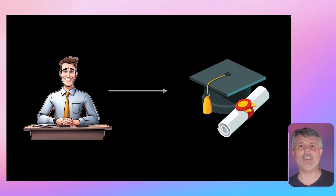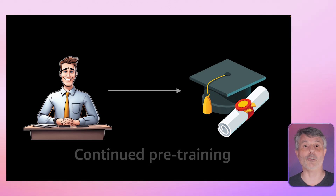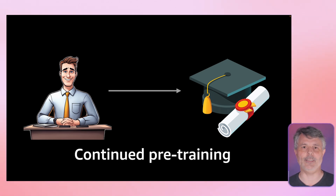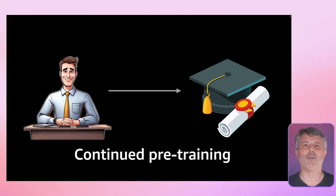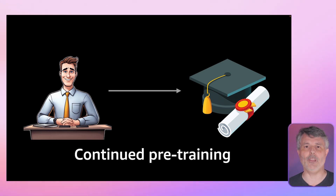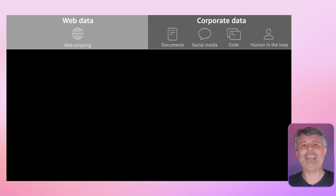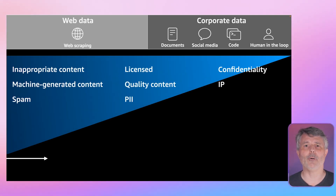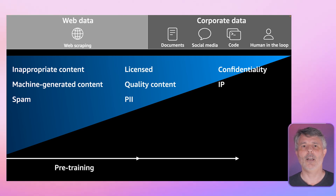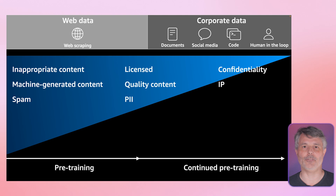The first option is to send Paul back to school and let him continue to learn on a large volume of additional data. I agree the word 'pre-training' here is a bit confusing. Pre-training is the task of training a foundation model before any kind of specialization — this is what large language model providers such as Meta, OpenAI, and Anthropic do, producing a general purpose model. But the idea here is to expand the model's comfort zone for better performance on a specific task, adding new vocabulary and acronyms, for example.